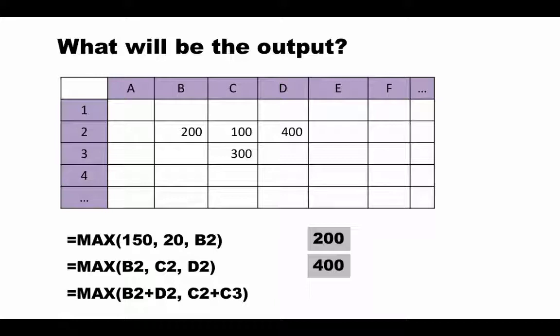I assume you paused the video and continued it. You got your result and the result is of course going to be 600 because what it's telling you is, it's saying first add b2 and d2, so which is 200 plus 400, 600, and then add c2 and c3 which is 100 plus 300, 400. So basically it's saying what is the maximum of 600 and 400.